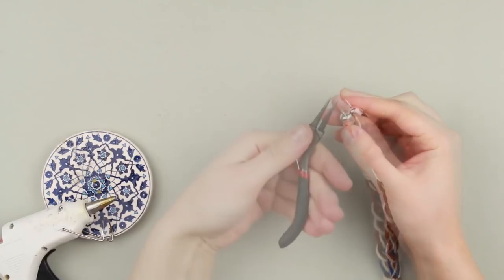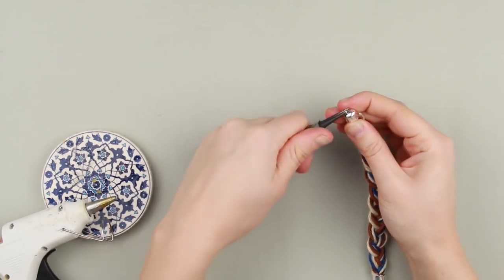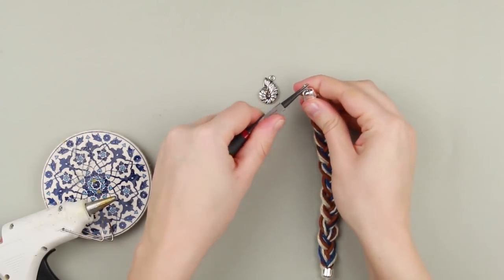Cut off the pin and make a loop. Use the special tools. Open the loop and put on the shell charm.